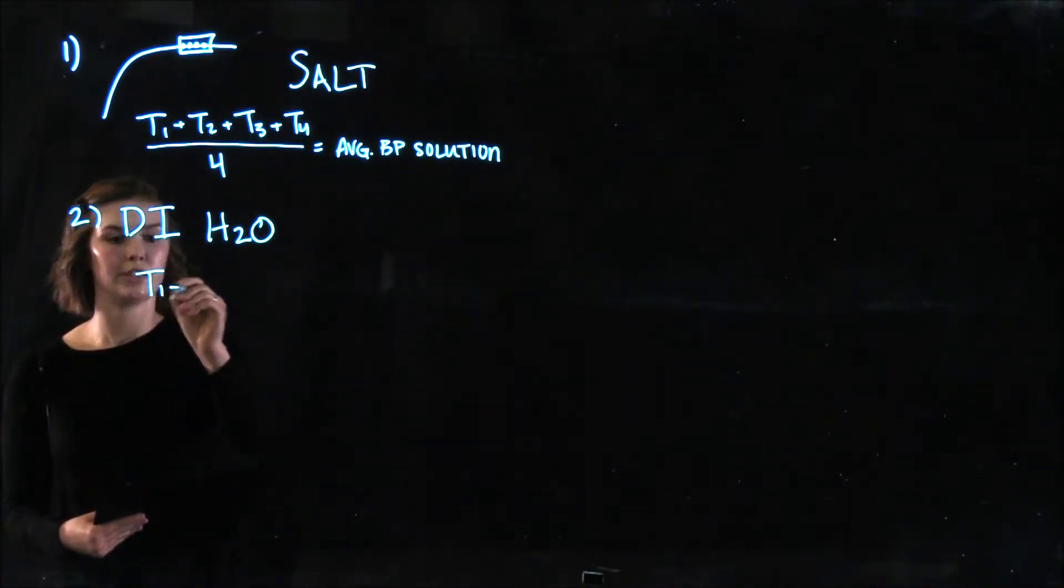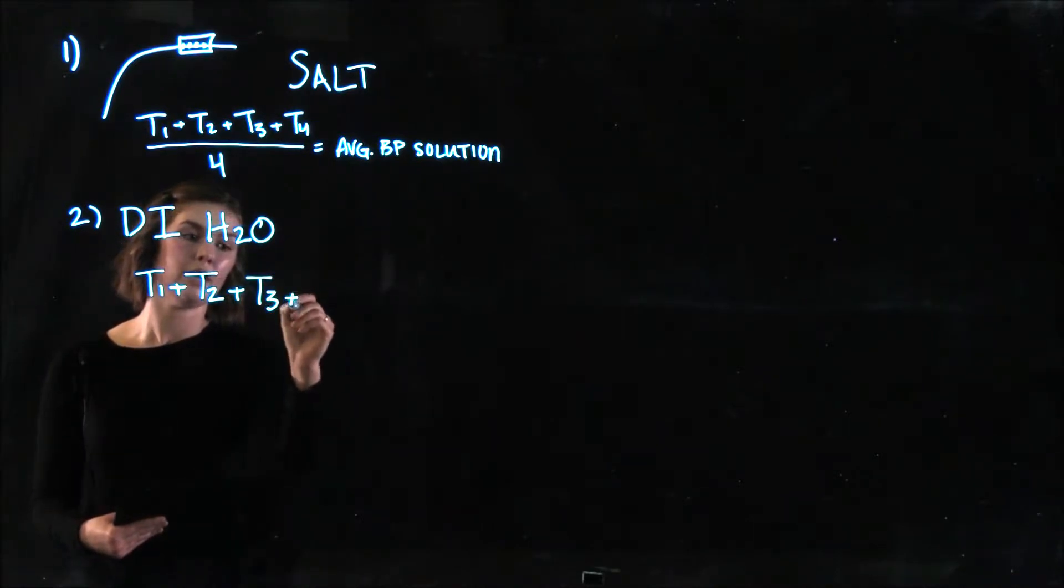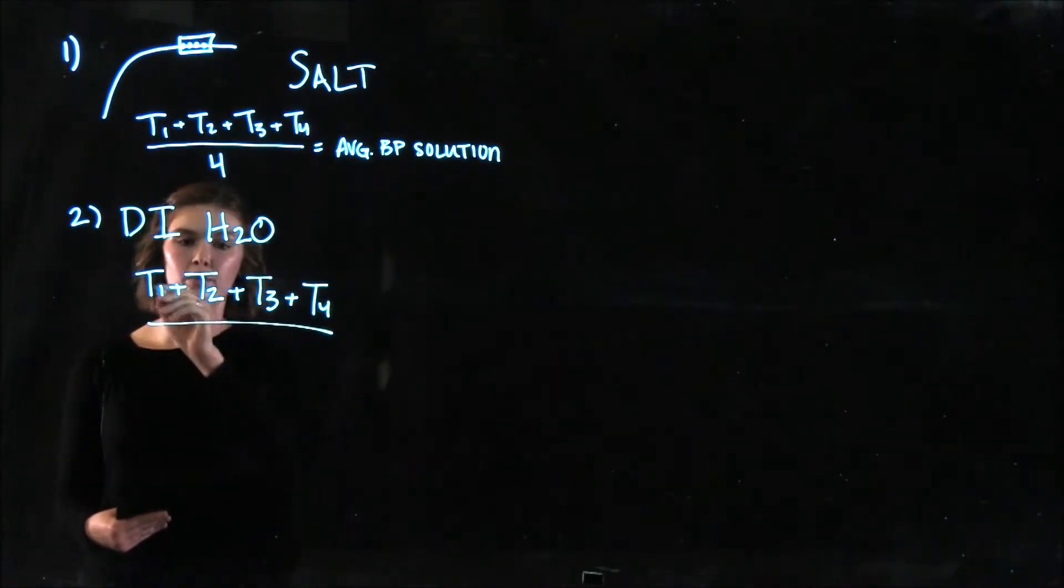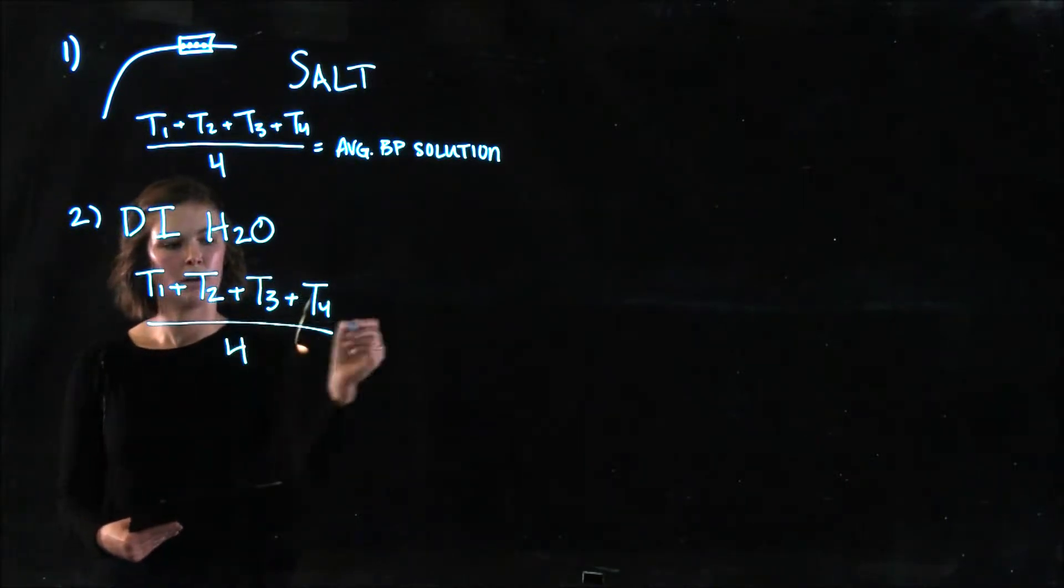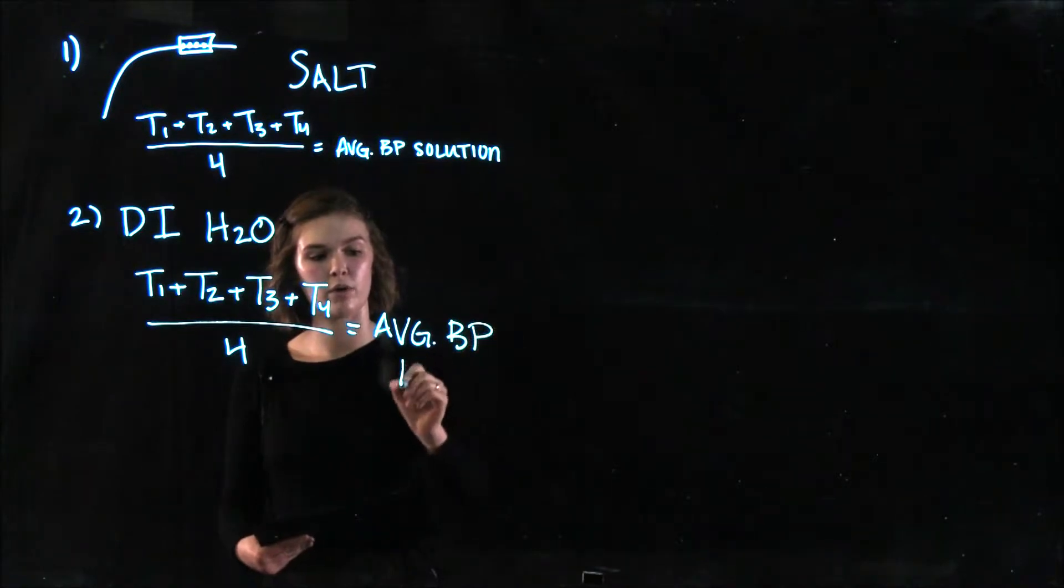So again, your T1, T2, T3, T4, all divided by one, two, three, four. Average boiling point of your water.